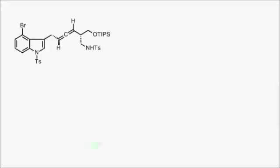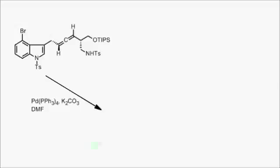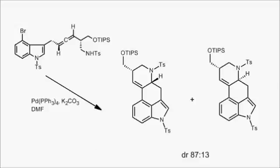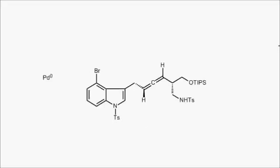Palladium tetrakis triphenylphosphine in dimethylformamide with potassium carbonate as the base, essentially forms the whole rest of the skeleton in one step with reasonable diastereoselectivity. This is worth looking at in some detail.